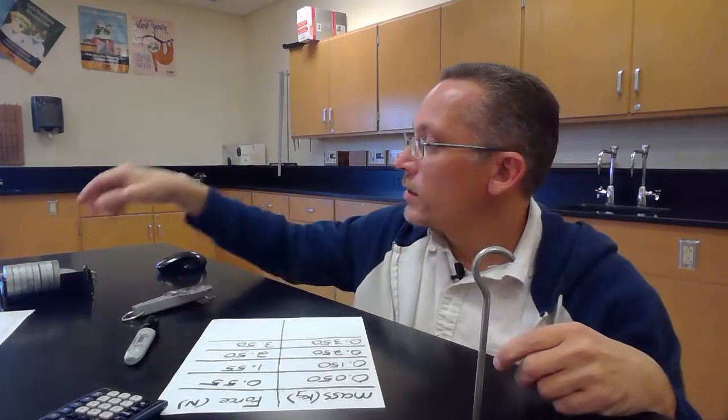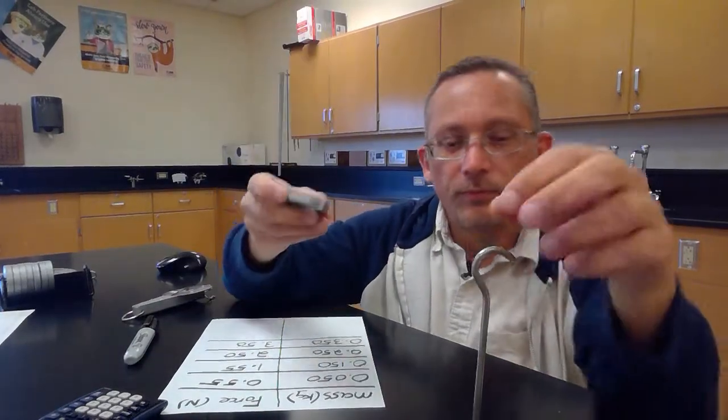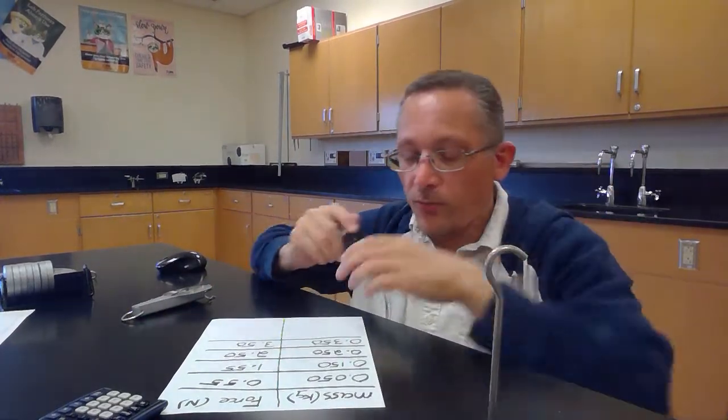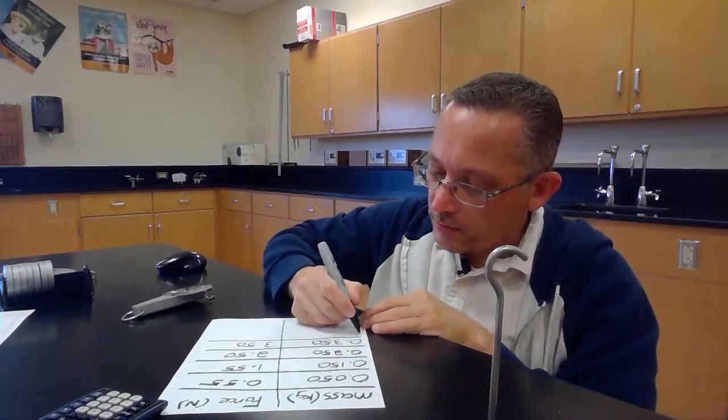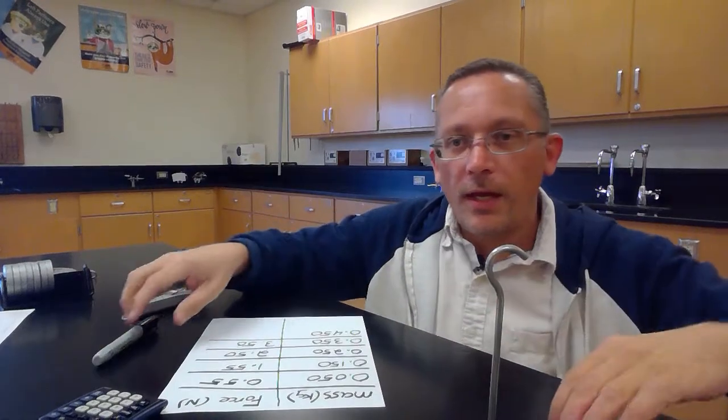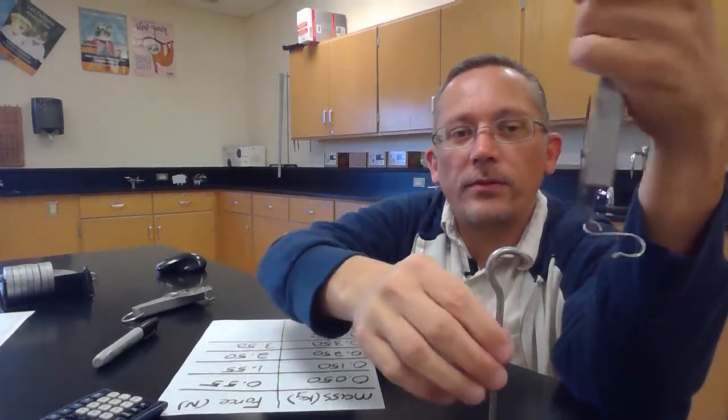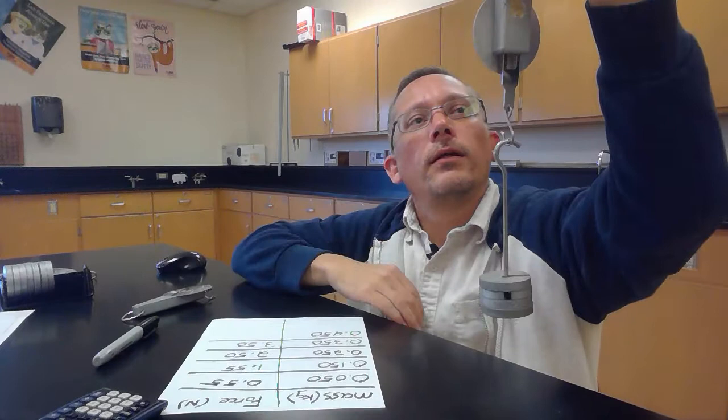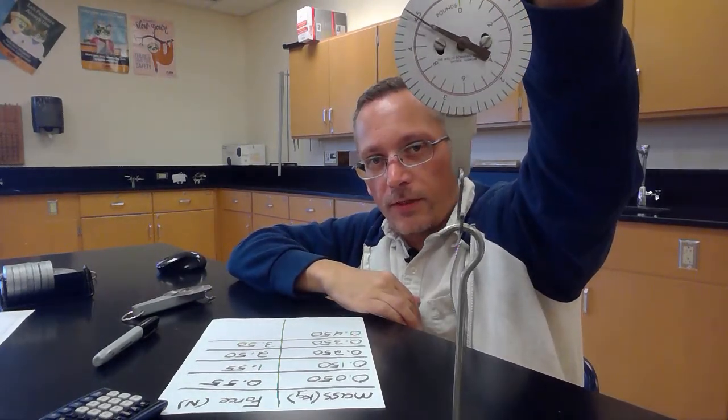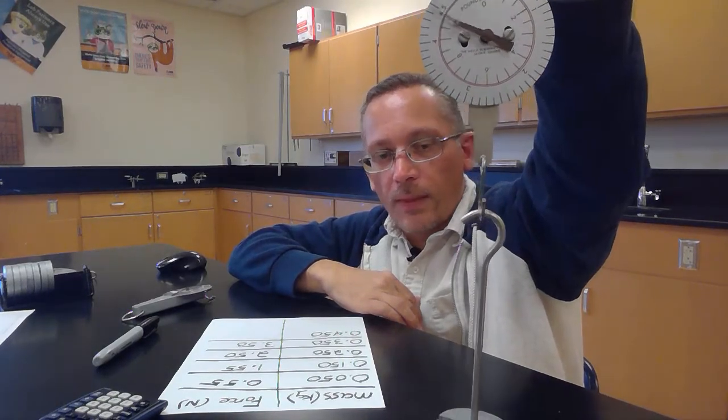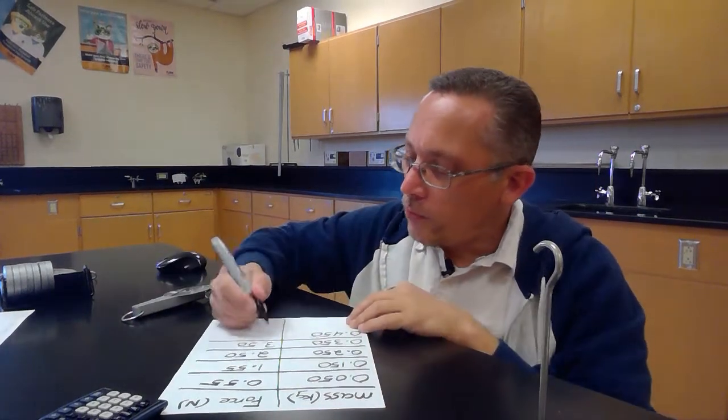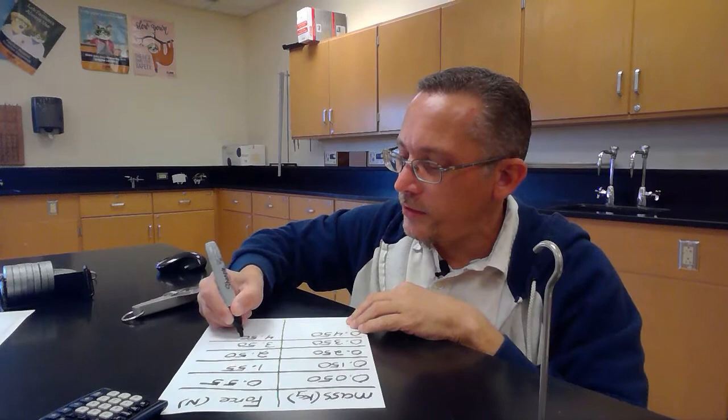Let's do a couple more data points here. So we'll add another 100 grams. So this was 350, now it's 450, which is 0.450 kilograms. And we'll hang this on the spring scale and see what we get. And that's right about the limit of this one. It's right around 4.5, pretty darn close to 4.5 Newtons. So I'm going to say 4.50 Newtons.